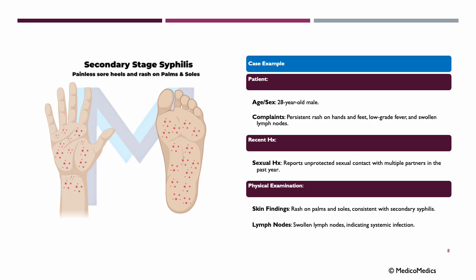Let's look at a case example. We have a 28-year-old male complaining of persistent rash on his hands and feet, presenting with low-grade fever and swollen lymph nodes. His sexual history confirms unprotected sexual contact with multiple partners in the past year. Physical exam finds rashes on palms and soles consistent with secondary syphilis, and swollen lymph nodes indicating a systemic infection — a clear case of secondary-stage syphilis.